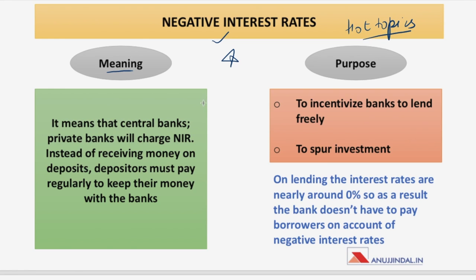Why does a central bank reduce its rate to such a level? The purpose is to incentivize banks to lend freely. Banks normally keep reserves with the central bank, but when the economy is going down, they want to lend less due to default risk. With negative interest rates, banks also have to pay interest on reserves kept with the central bank, so they tend to withdraw excessive reserves and use them for lending.